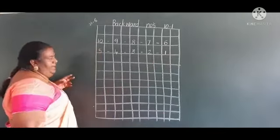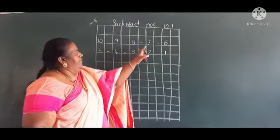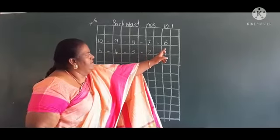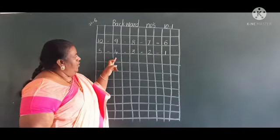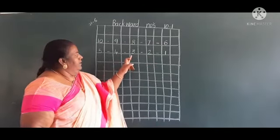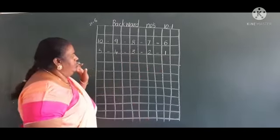Children, again I am repeating: 10 before 9, 9 before 8, 8 before 7, 7 before 6, 6 before 5, 5 before 4, 4 before 3, 3 before 2, 2 before 1.